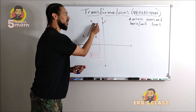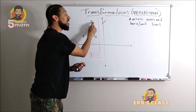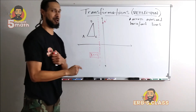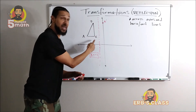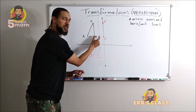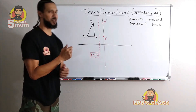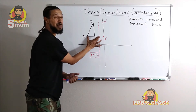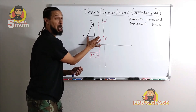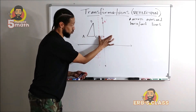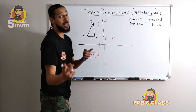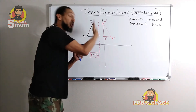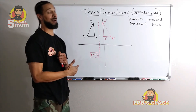If B is one space from the mirror, then its reflection B prime must also be one space away. Same for C — if C is one space away, C prime must be one space away. For A, it looks like about three spaces away, so A prime must be three spaces away on the other side. Connect the dots, and now I have my reflection across this vertical line.